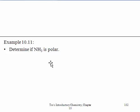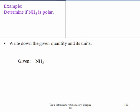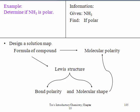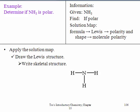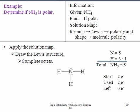Pause the slide and see if you can determine if ammonia is polar or not. The first thing we need to do is write down its Lewis dot structure. Here is its Lewis dot structure — it has a lone pair on its central atom, so therefore it is going to be polar.